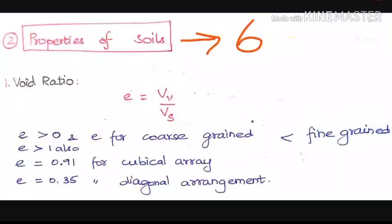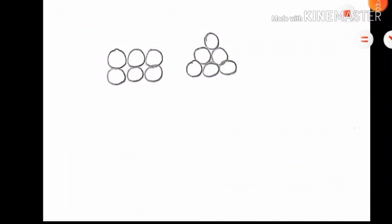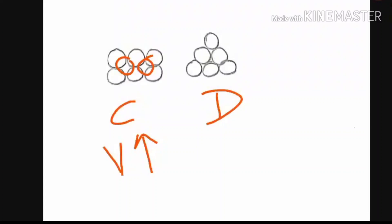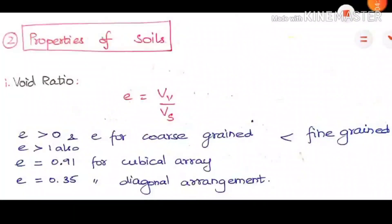The E value for cubical array and diagonal arrangement of soil is given here, understood with this diagram. In the cubical array arrangement there are a lot of gaps, so the voids are more. In the diagonal arrangement, the voids are very much less. Therefore the cubical array has a higher void ratio and the diagonal arrangement has a lower void ratio — determined as 0.91 for cubical array and 0.35 for diagonal arrangement.